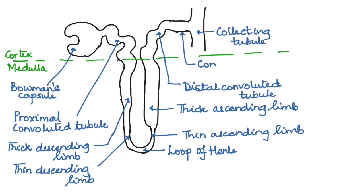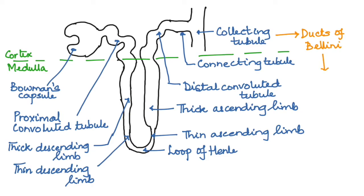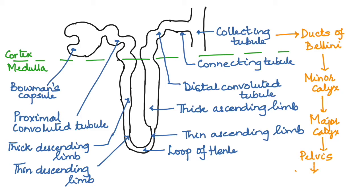The connection between the distal convoluted tubule and the collecting tubule is the connecting tubule. Many collecting tubules join together to form the duct of Bellini, located near the renal papillae, which opens into the minor calyx. The minor calyx then opens to the major calyx, then to the pelvis, and finally to the ureter. So this is the structure of the renal tubule.